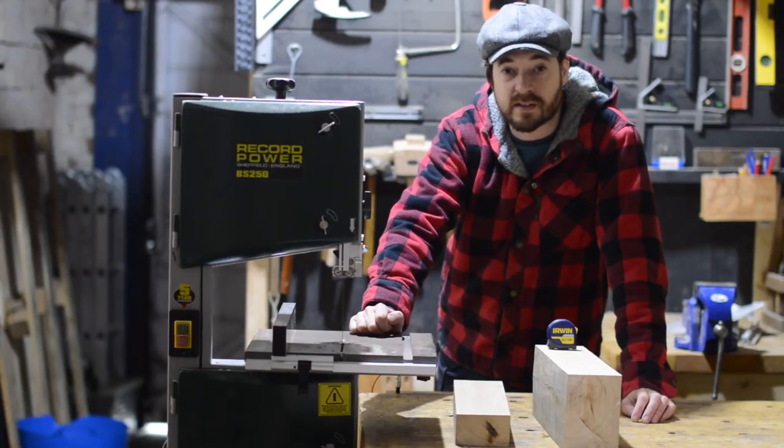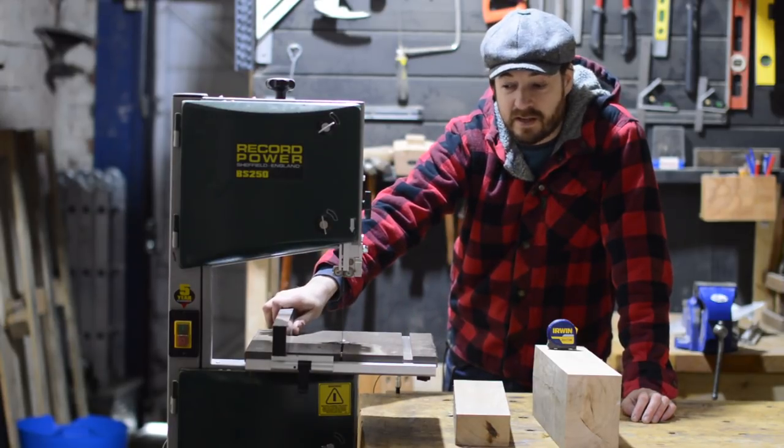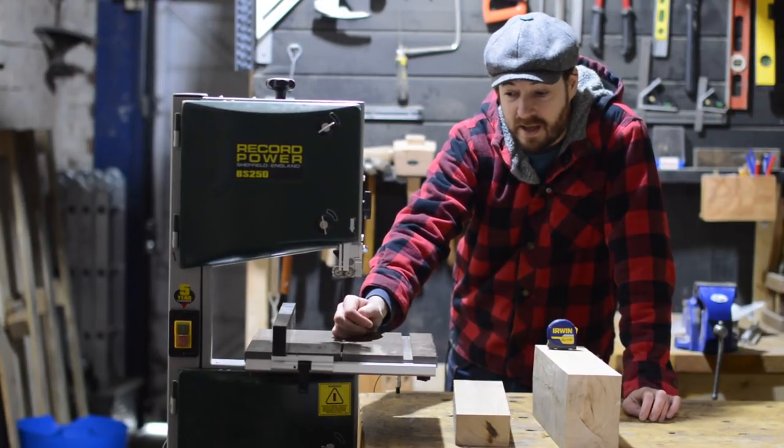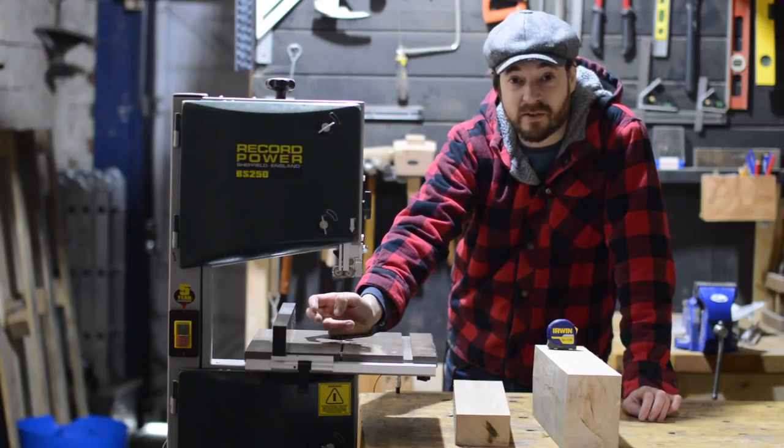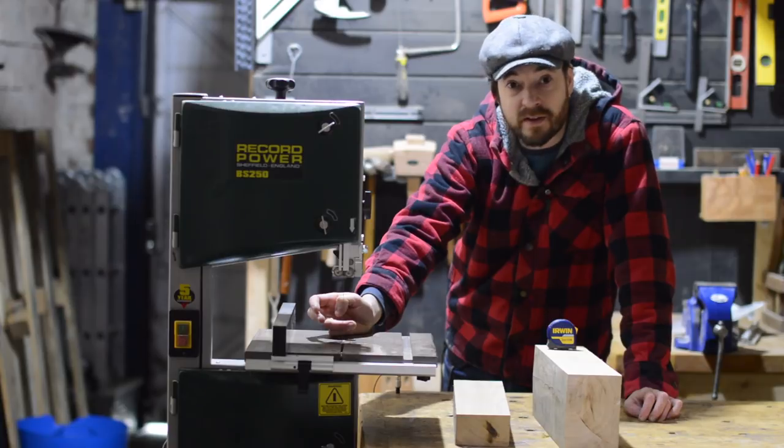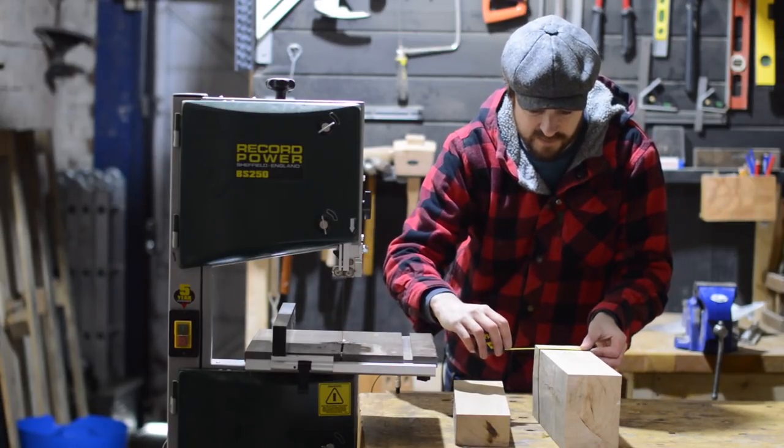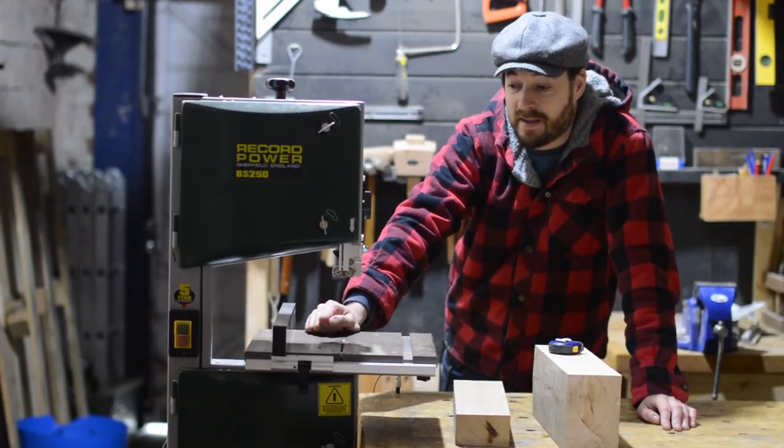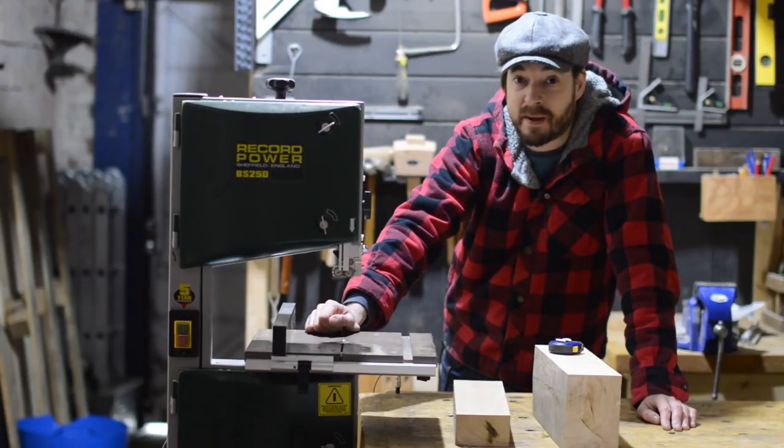So I think my conclusion last time was that I was pretty happy with this saw, but now with a new fence, a new blade which has made a huge difference—I mean, I had an aftermarket blade before but I think it had been on there too long and got a bit blunt—and a few other tweaks, it's a great machine. I mean, it cut through this 4-inch piece of oak with really no problem at all. So yeah, this machine's only getting better for me.